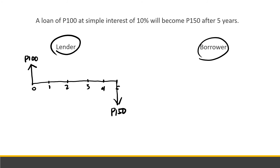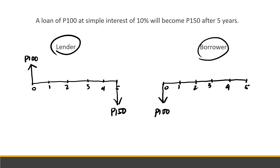From the borrower's perspective: the 100 received is a positive cash flow (downward arrow at time 0), and the 150 paid back after 5 years is a negative cash flow (upward arrow at year 5). So the cash flow diagram is simply reversed depending on whose perspective you take.